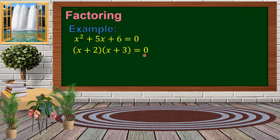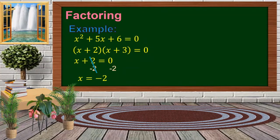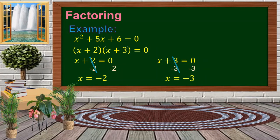We equate the first factor to 0: x plus 2 equal to 0. Subtracting 2 on both sides gives x equal to negative 2 — that is the first root. For the second factor, x plus 3 equal to 0, subtracting 3 on both sides gives x equal to negative 3. That is the second root. So the roots are negative 2 and negative 3.